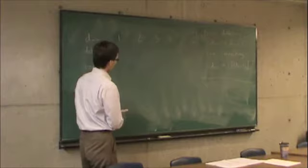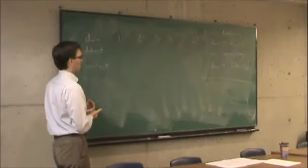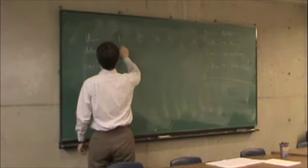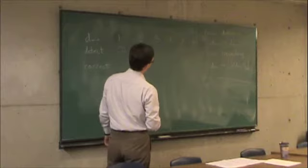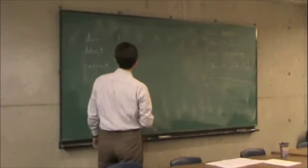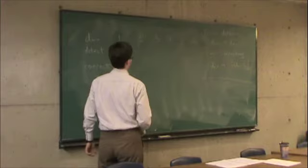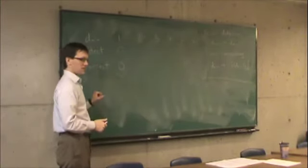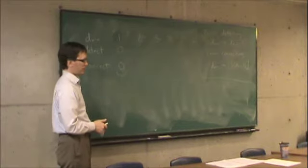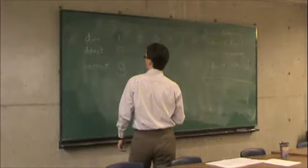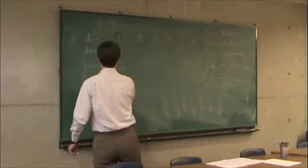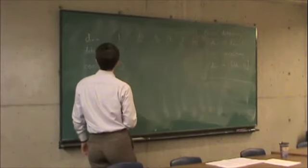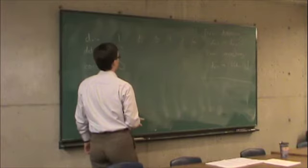Dmin of one means that there's at least one pair of code words that differs in one place. Such a code can detect Dmin minus one, which is zero, and can correct one minus one, which is zero. Does this make sense? Yes, because if there's a pair of code words that differs in one place, then a single error in the worst case can flip one code word to the other. You can't guarantee being able to detect or correct any errors.